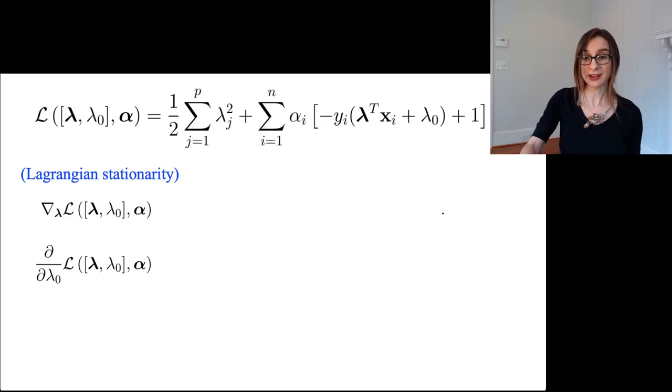Now I have the first of the KKT conditions: Lagrangian stationarity. This thing is like a set of ion cannons against our giant alien enemies. I'm going to take the gradient of the Lagrangian with respect to that vector lambda. If you feel more comfortable, you can take single derivatives - the partial derivative of the Lagrangian with respect to one lambda_j at a time.